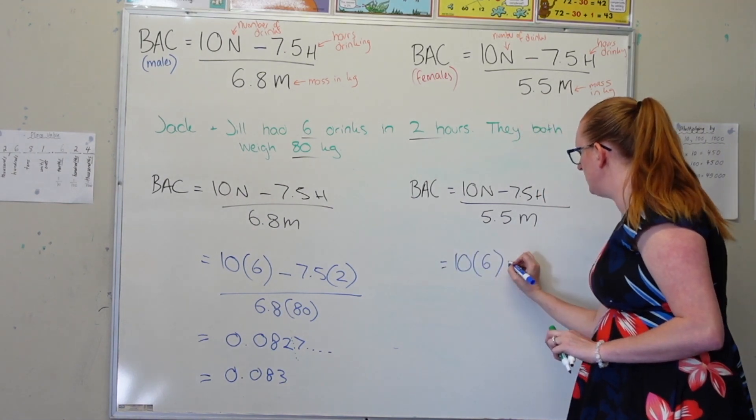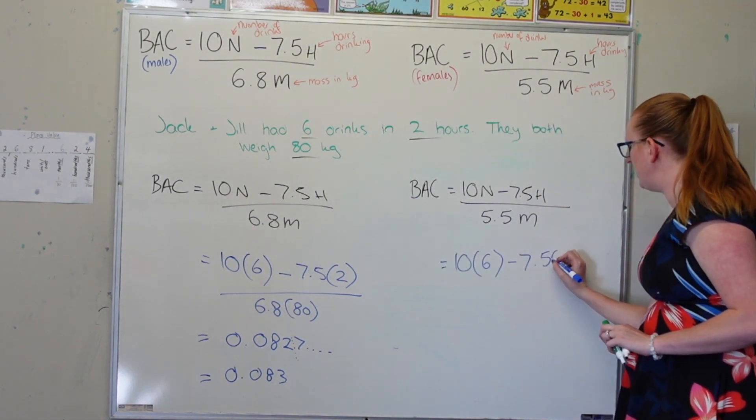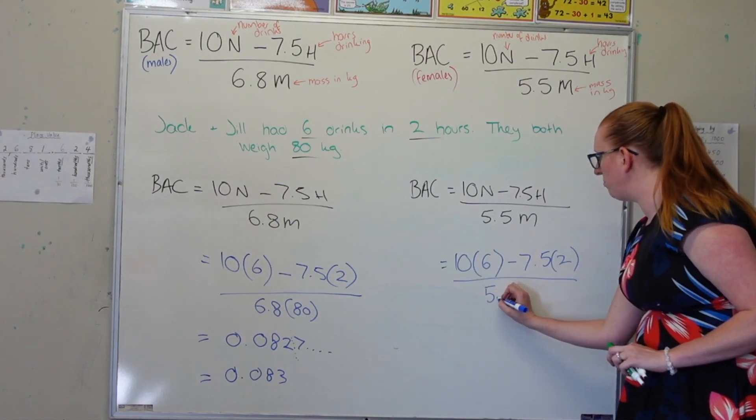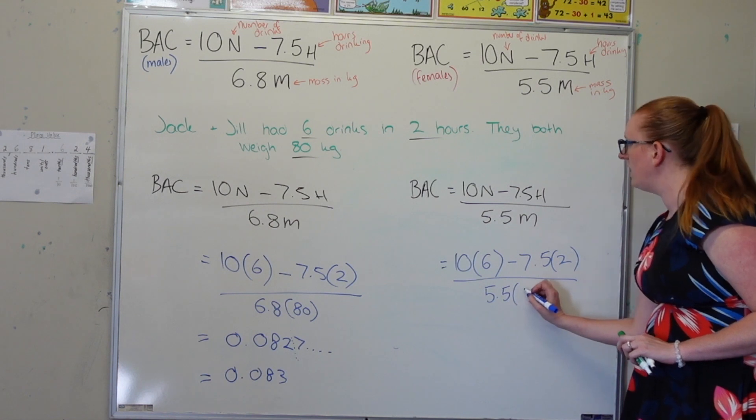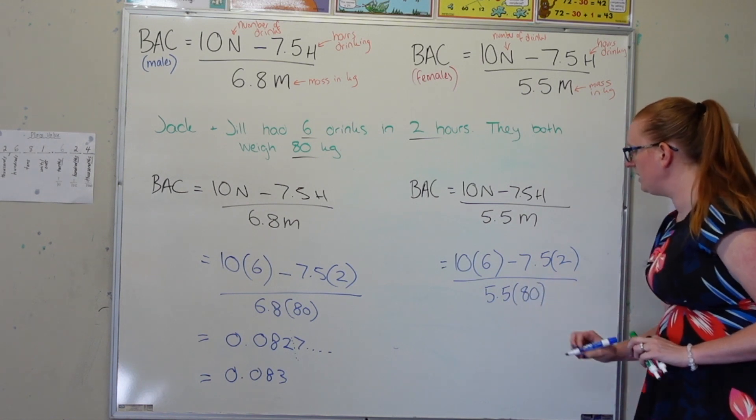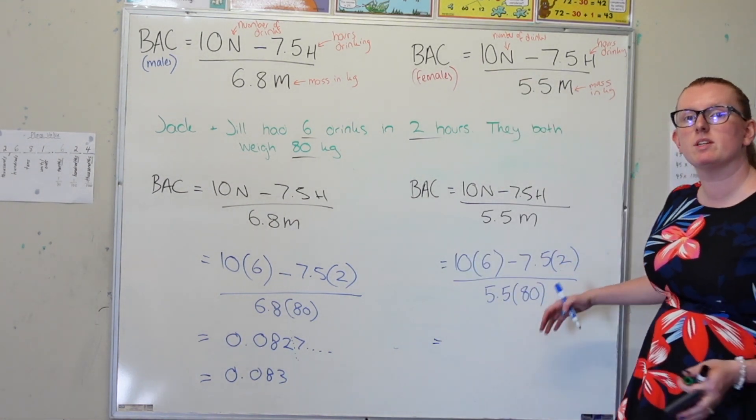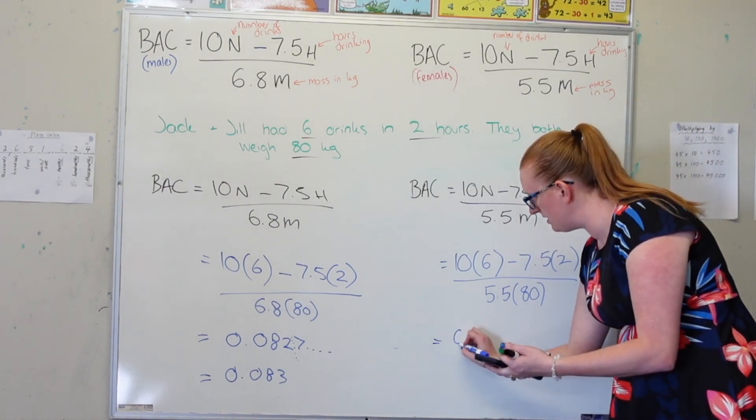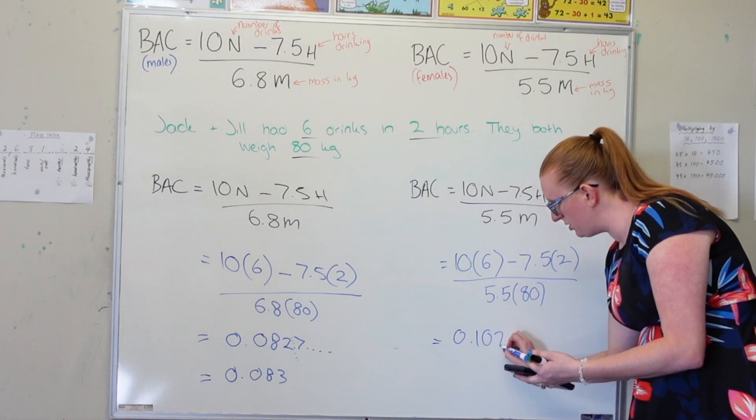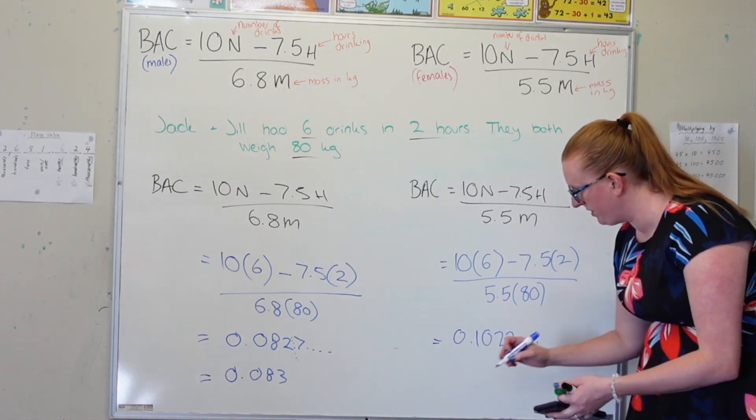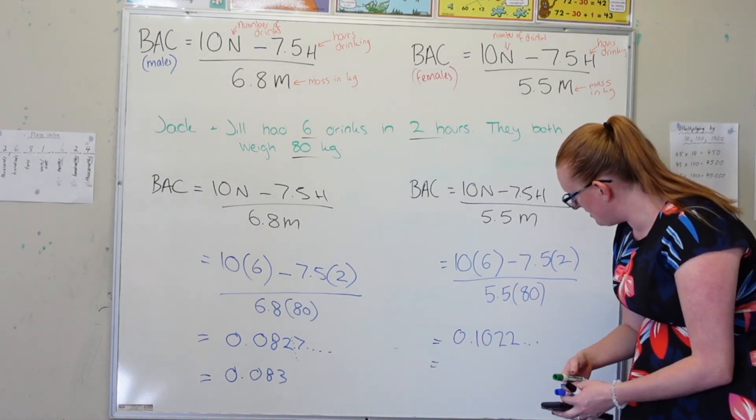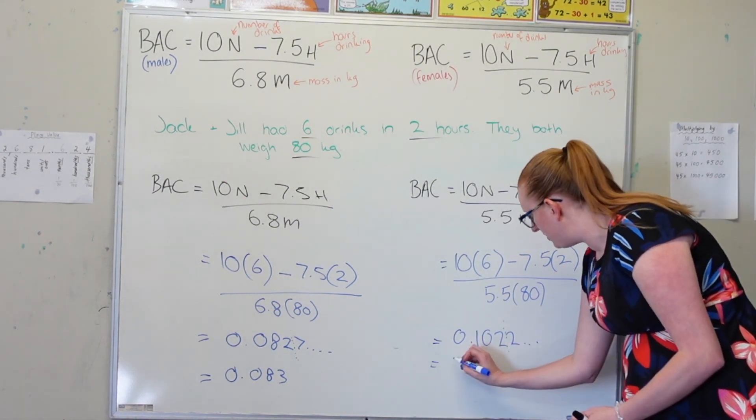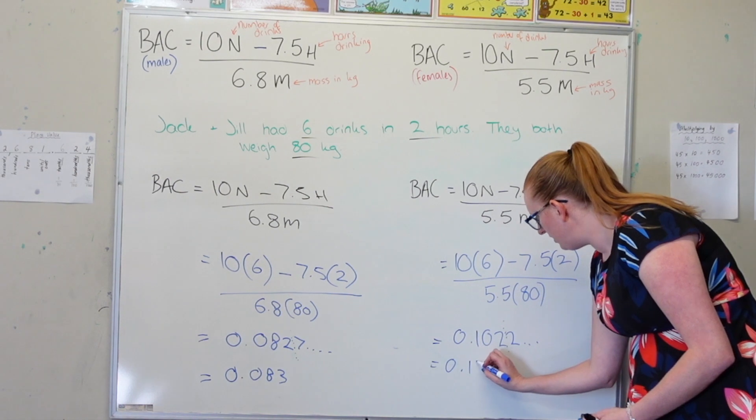So 10N is 6 minus 7.5, 2 over 5.5, and her mass is 80 kilos. So typing this into a calculator, Jill's blood alcohol concentration is 0.1022, and Jill's is 0.102.